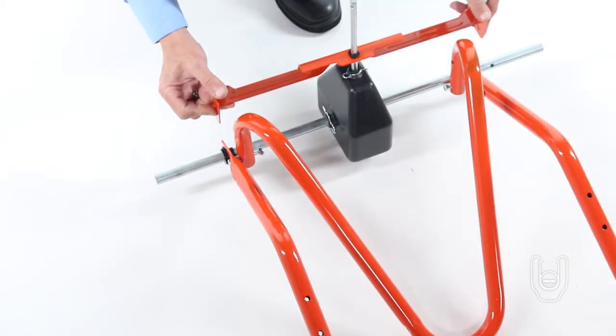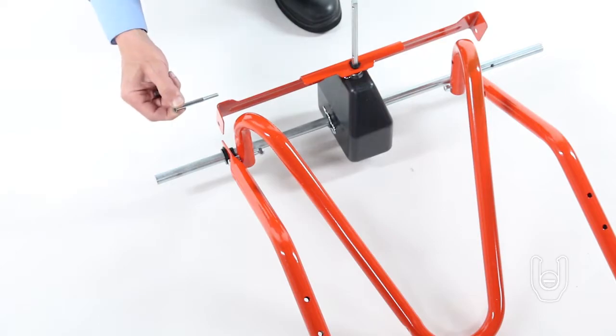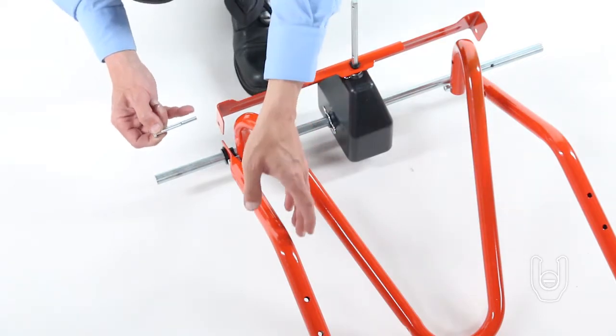Then, align the cross brace and loosely secure it with 1/4 by 2-1/2-inch hex bolts, Part B.